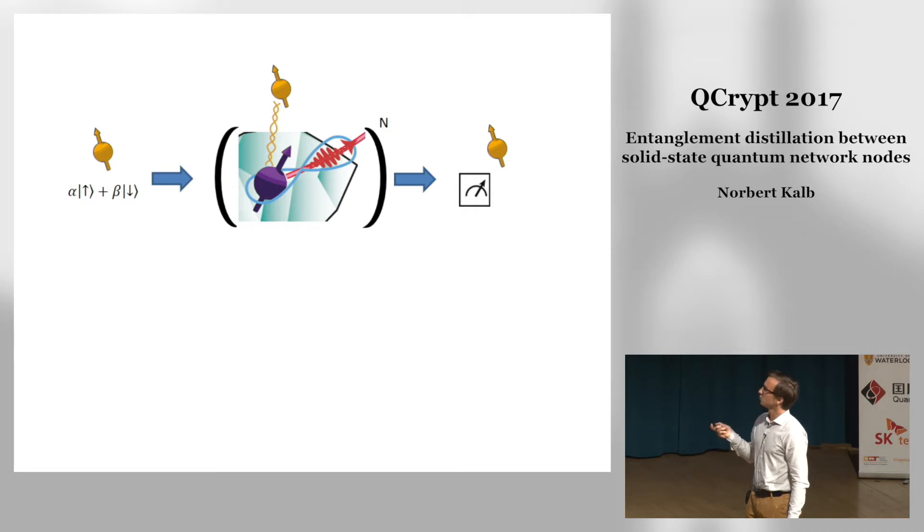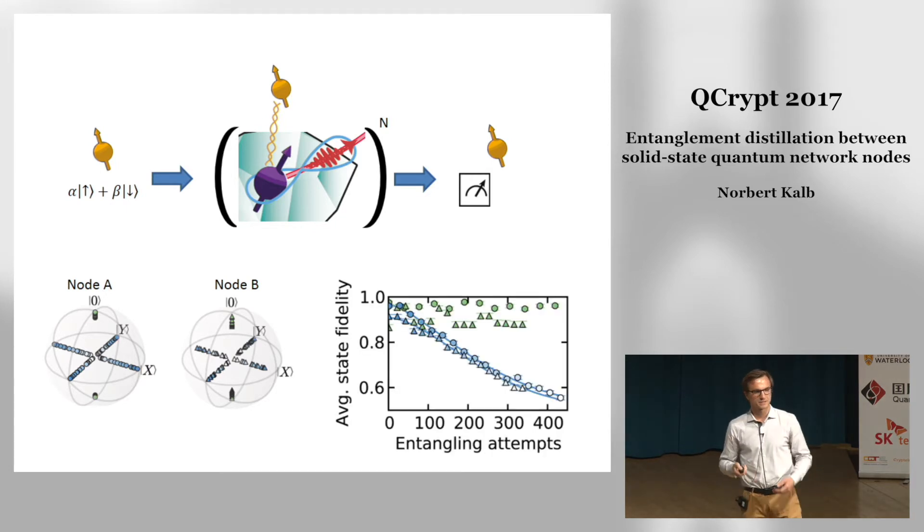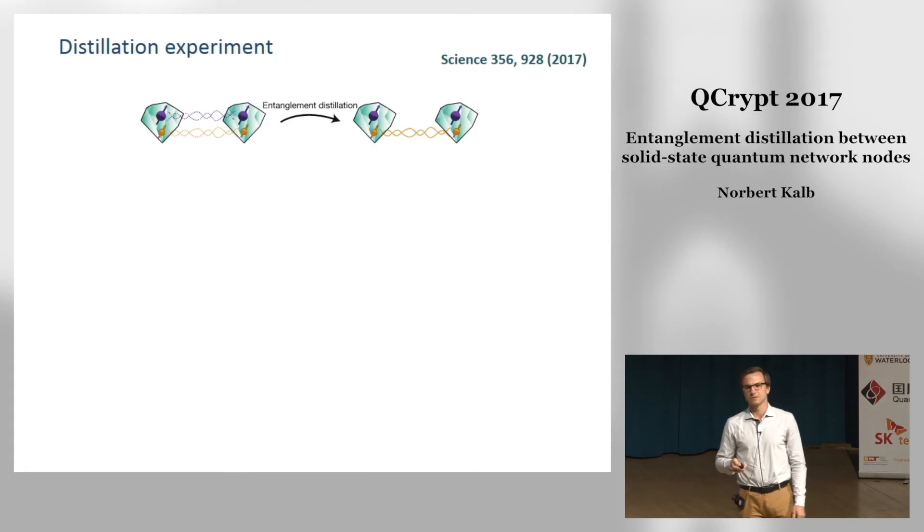We can check the resilience of our nuclear spin memories just by initializing them into a state of our liking, performing multiple entangling attempts on the NV center, and then reading out the nuclear spin state. If we do this with both our quantum network nodes, we see that the noise we obtain is mainly dephasing noise as predicted. So the eigenstates remain well-defined, whereas states on the equatorial plane of the Bloch sphere dephase. If I depict this as a function of the number of entangling attempts, you can see we have still good memories for about 100 entangling attempts, and this actually suffices to keep on going with our distillation experiment.